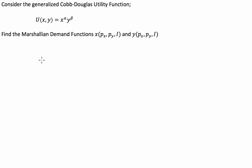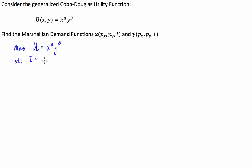Basically what Marshallian demand is, is we ask ourselves how do we maximise our total benefit or total utility for a given income. So the optimisation problem is we've been asked to maximise utility U, which in this case is equal to X to the power of alpha, Y to the power of beta, subject to a particular income constraint. Our income constraint is that our income will be fully spent on the price of X times the amount of X we buy, plus the price of Y times the amount of Y that we buy.